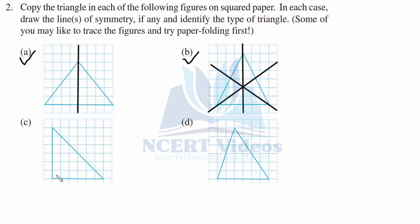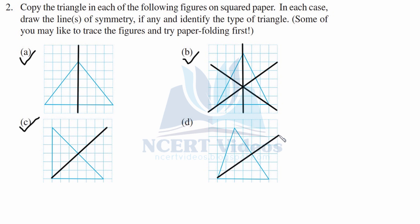Part C is a right-angle triangle — it has a right angle and only one line of symmetry, with no other possible lines of symmetry. Part D is again an isosceles triangle, just tilted to the side. Similar to part A, it has one line of symmetry passing through the top vertex to the midpoint of the opposite side.